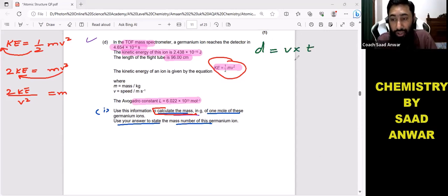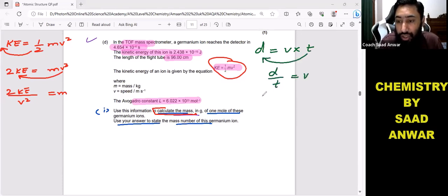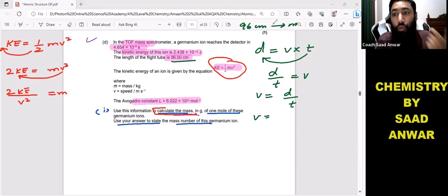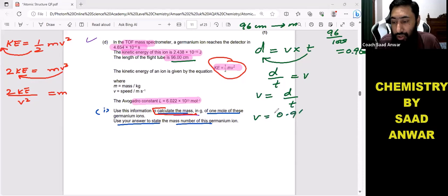When I bring v to the other side, distance over time equals velocity. So distance is given, 96 centimeters. To convert this into meters, divide by 100. Divide 96 by 100 and you will get the answer in meters, and that is 0.96 meters.